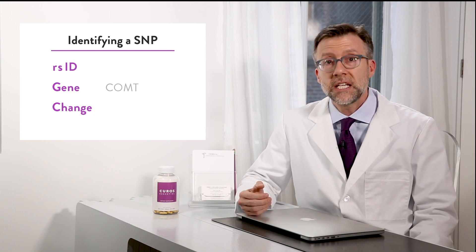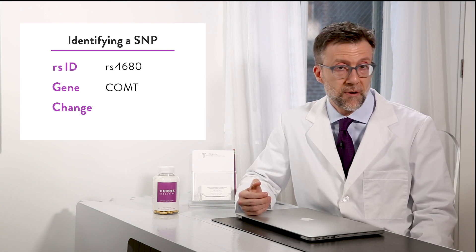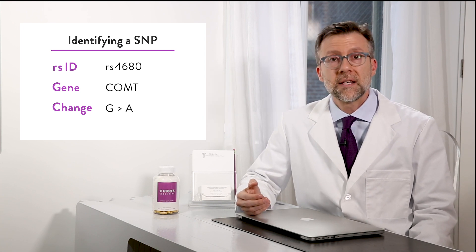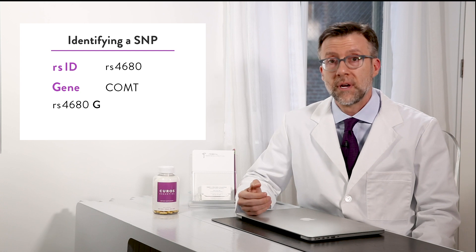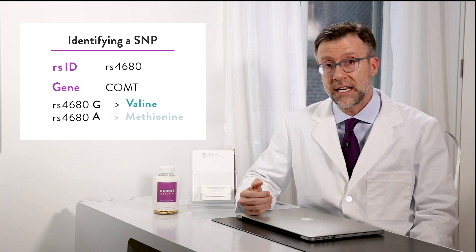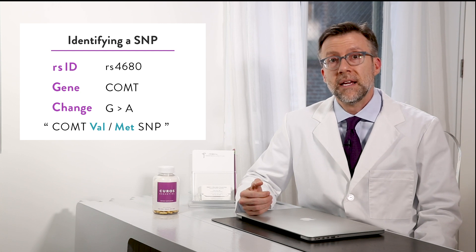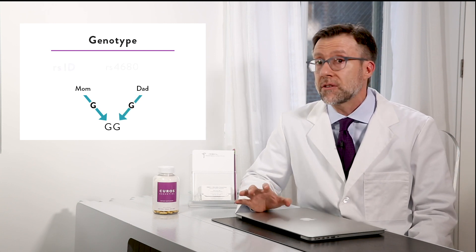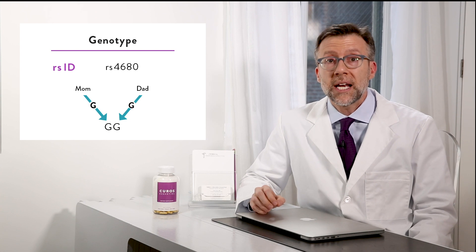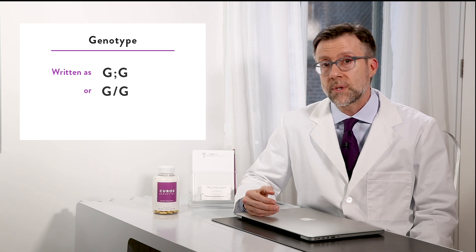So when you see a genetic report, here's how they'll talk about it. They'll give an ID number to that particular variant called an RSID, which stands for reference SNP ID. They'll name the gene, and then they'll say what letter got changed — meaning what nucleotide got changed in that mutation or SNP. For example, the COMT gene, which controls dopamine levels in your brain, has a well-studied SNP RS4680. Some people have a G (guanine) and some people have an A (adenine) at that location. Because that changes which amino acid is coded for, some people make a valine and some people make a methionine at that location — so that is often referred to as the COMT val/met SNP.